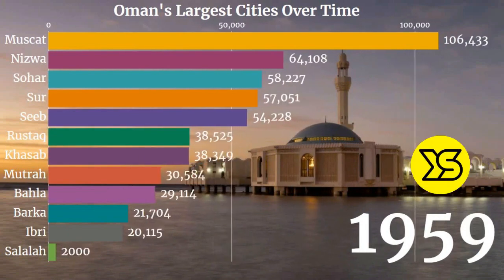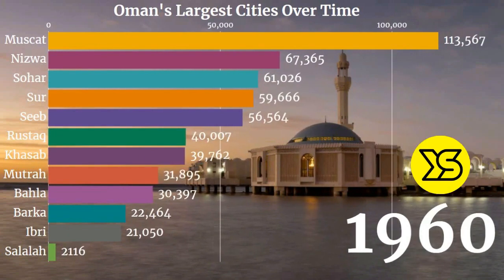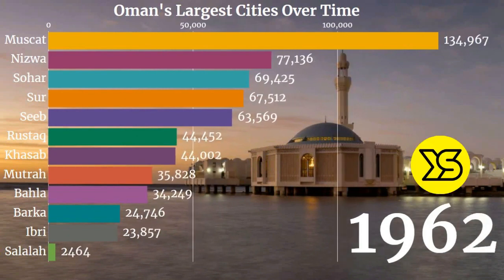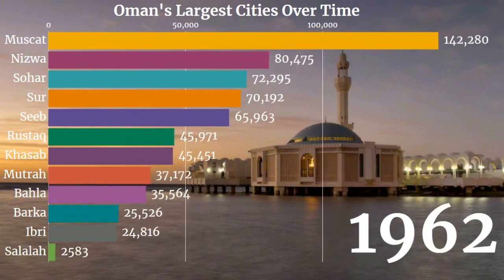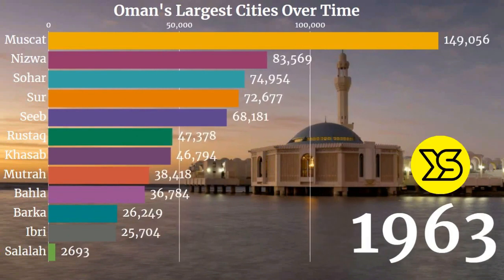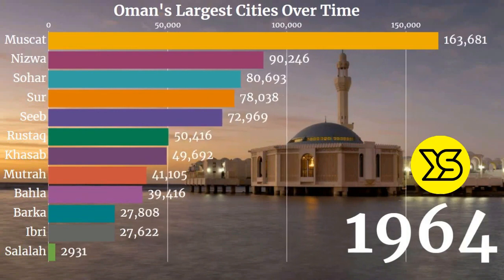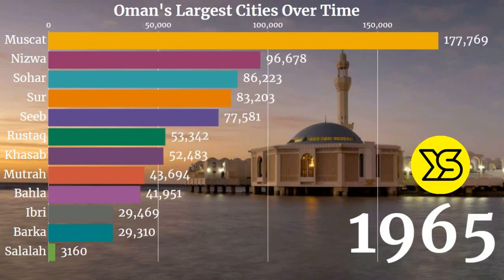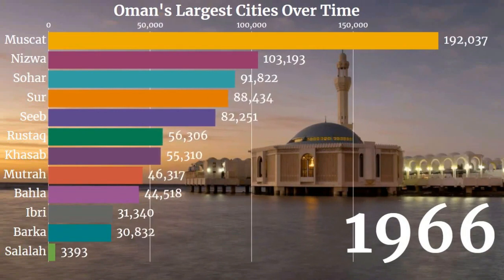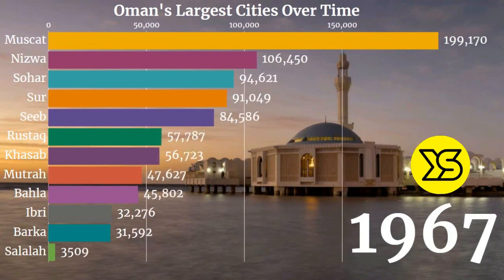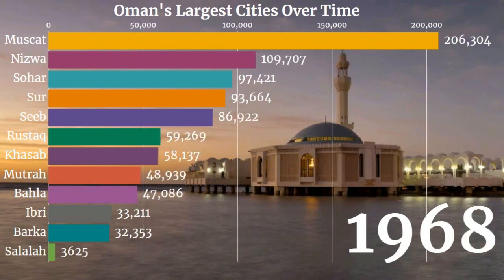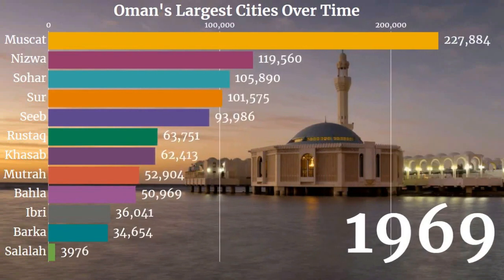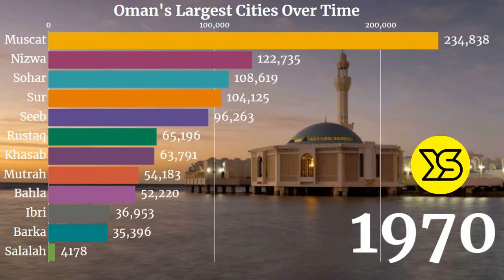The population you can see on your screen, but I'll talk a little bit about Oman. Oman is an amazingly beautiful Arab country. It has land borders with Saudi Arabia, United Arab Emirates, and Yemen, and it has marine borders with Iran and Pakistan. Its currency is called the Omani Rial.